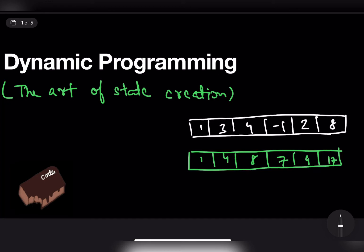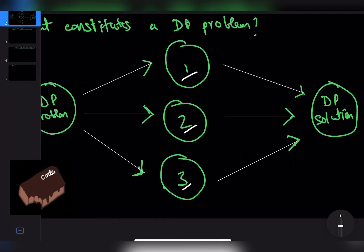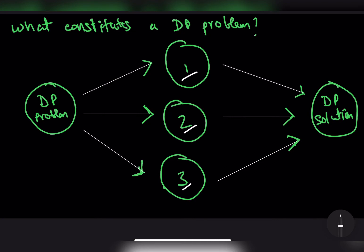So basically whenever I see a dynamic programming problem, I divide it into three different sub-problems: sub-problem one, two, and three. After I solve the sub-problems one, two, and three, I integrate them together to get the final result which I am looking for.